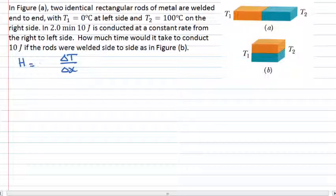It's also proportional to the thermal conductivity of the material. The larger the thermal conductivity, the better the material is at conducting heat. It's also proportional to the cross-sectional area.